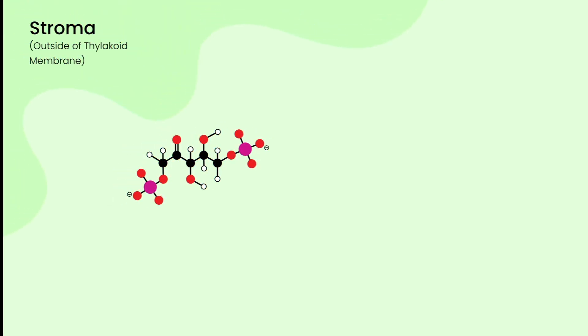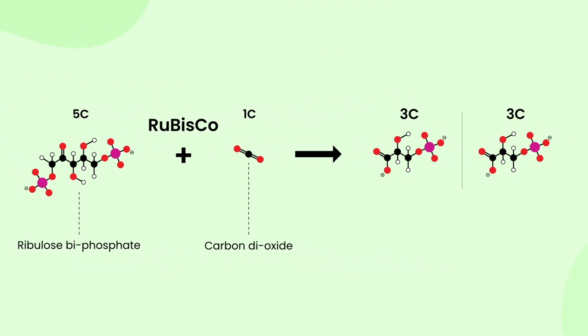Inside stroma, RUBP, ribulose biphosphate, a 5-carbon molecule, reacts with the carbon dioxide, which is a 1-carbon molecule, with the help of an enzyme called RUBISCO, to form two 3-carbon molecules called phosphoglycerate.